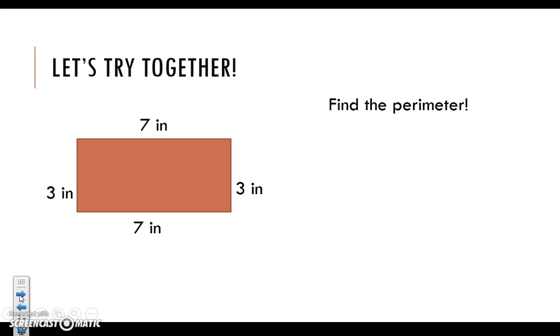Let's try one together. Note that up here in the corner it says that we're going to find the perimeter for this problem. To find the perimeter, P stands for perimeter, we add up length 1 plus length 2 plus width 1 plus width 2.